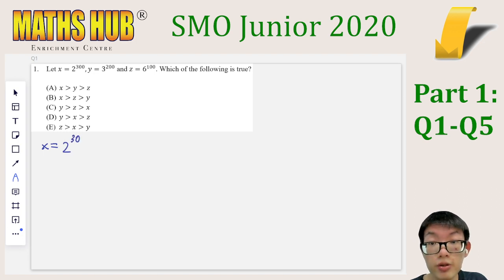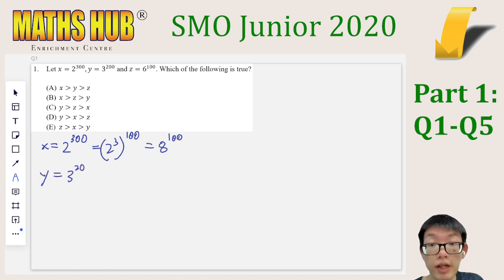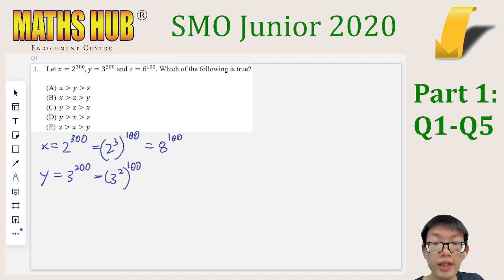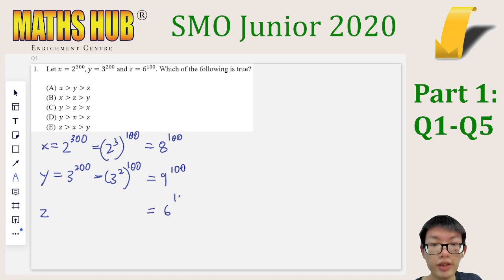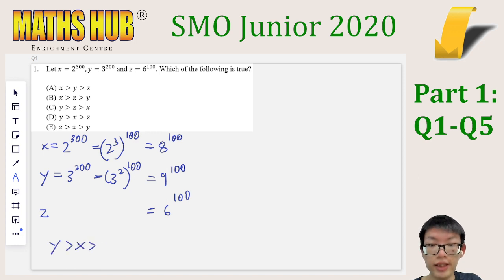For x, 2 to the power of 300 is 2 cubed, then to the power of 100, which is 8 to the power of 100. For y, it is equal to 3 to the power of 200, which is 3 squared to the power of 100, and that is 9 to the power of 100. Finally, z is just equal to 6 to the 100 — it is already in the correct form. Therefore, comparing them in descending order gives y > x > z, which is option D.